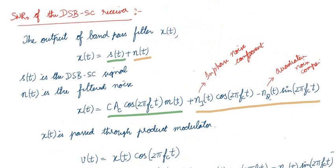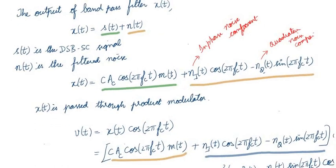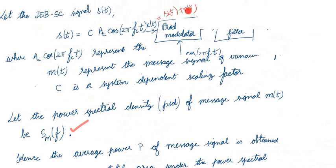Next we compute the signal-to-noise ratio at the output of the DSB-SC receiver. We know x(t) is the sum of the modulated signal s(t) plus filtered noise n(t). The noise n(t) is resolved into two components: in-phase noise component n_i(t) and quadrature noise component n_q(t), which are 90 degrees apart — that is why one is called the quadrature component. This x(t) is multiplied with the local oscillator signal cos(2πfct).